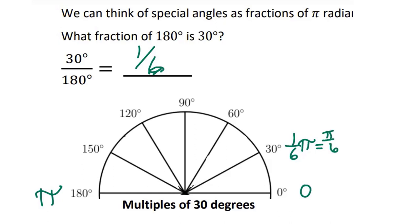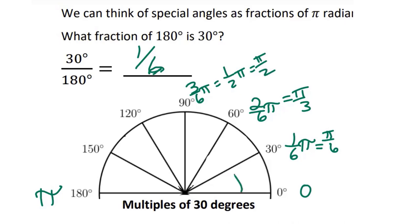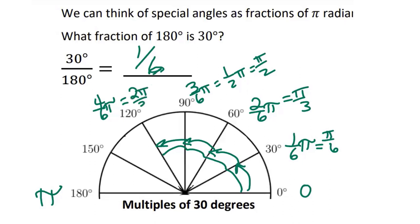60 degrees would be 2 sixths of π — however, if we reduce that, it's π over 3. 90 degrees is 3 sixths of π, or halfway to π, which is π over 2. 120 degrees is 4 sixths of π, which reduces to 2π over 3. 150 degrees is 5 sixths of π, which is 5π over 6 — that's how we write that special angle in radians.